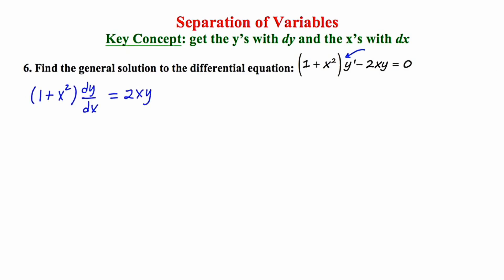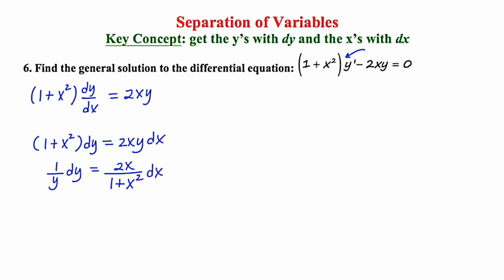The next thing I'm going to do is cross multiply. Now keeping my key concept in mind — getting all the y's with dy and all the x's with dx — this is going to require some division on both sides. Now that all the y's are with dy and all the x's are with dx, I'm going to integrate on each side. On both the left and the right hand side, the numerator is precisely the derivative of the denominator, so in both cases I'm going to use the ln rule.